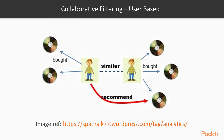Collaborative filtering works like this: I'm a user and I bought some items, and what the recommendation system will do is match me with similar users. Based on what those other users bought, it will recommend roughly what my similar users bought. That is collaborative filtering.